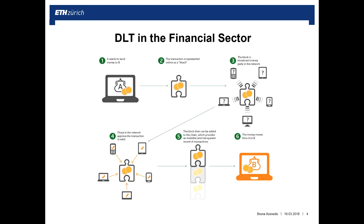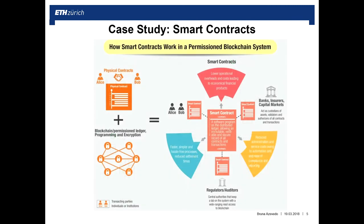Another problem with our current system is that we still rely on many paper documents, which leads to larger settlement times and lack of efficiency. For example, to provide finance to exporters, we need an importer's bank to issue a letter of credit, and then an exporter's bank to advance funds. These transactions have to be validated manually, which takes much more time than with distributed ledger technology.